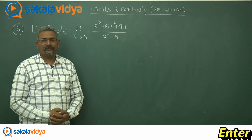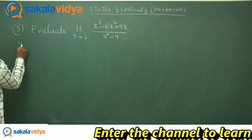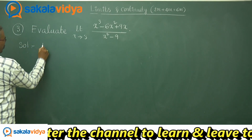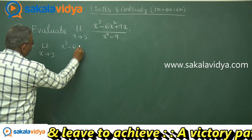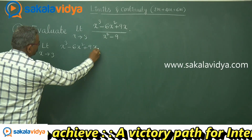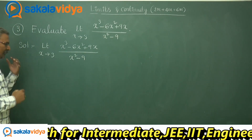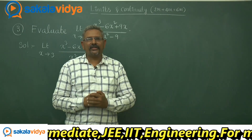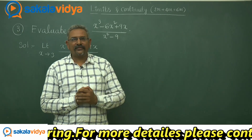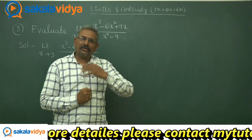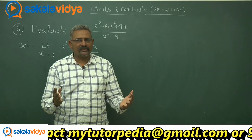Let us evaluate one more limit of the function. The solution: limit x tends to 3 of [x³ - 6x² + 9x] upon [x² - 9]. If you substitute x = 3, you get the 0/0 form, which is the indeterminate form. That is why we need to find the factors of the numerator and denominator — the common factor should get cancelled.